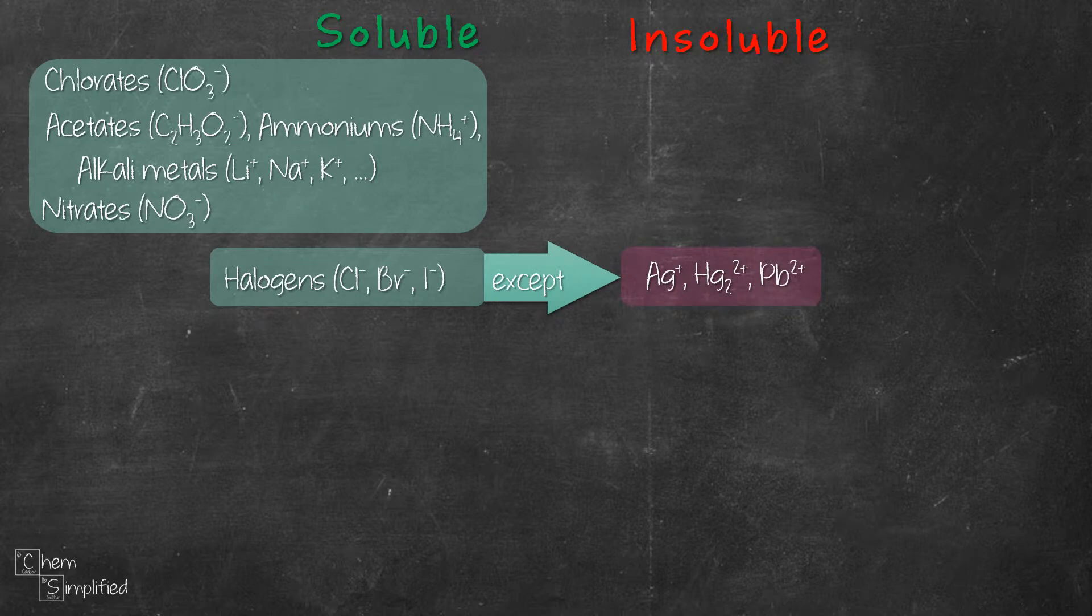Next are the halogens. Generally, anything with halogens will be soluble, except for when combined with small, medium, large metals, SML. That's an easy way to remember silver, mercury, and lead.